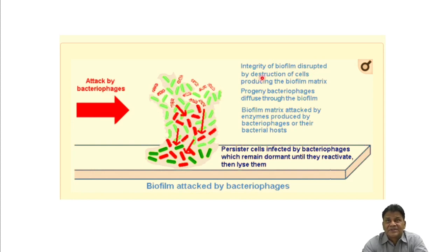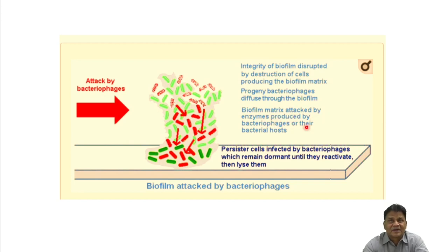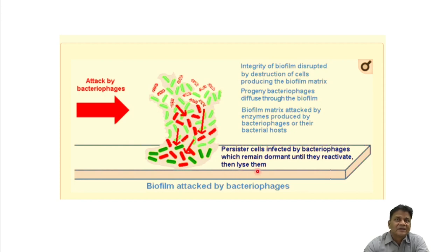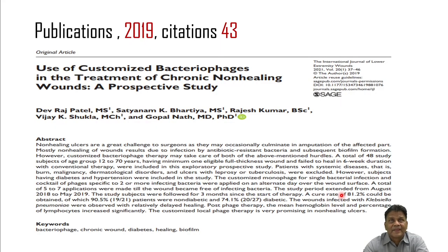The three mechanisms are: first, integrity of the biofilm is disrupted by destruction of cells producing the biofilm matrix; second, progeny bacteriophages diffuse through the biofilm; and third, the biofilm matrix is attacked by enzymes produced by bacteriophages. Additionally, persister cells are infected by bacteriophages which remain dormant until they reactivate, then lyse them.